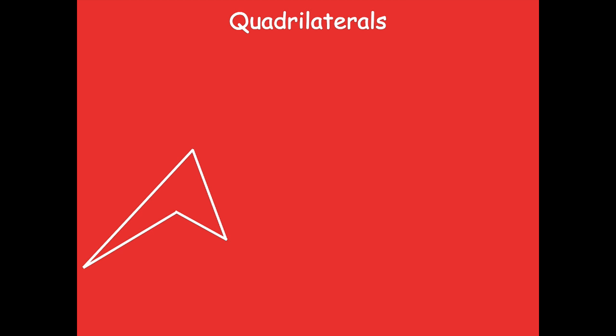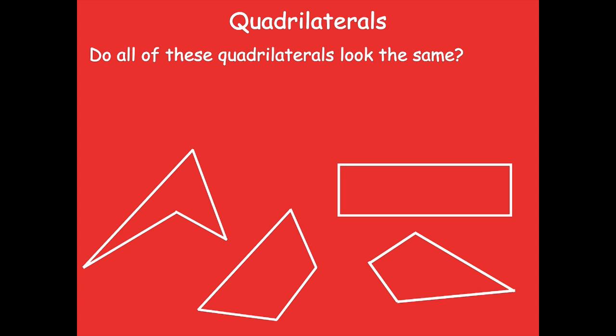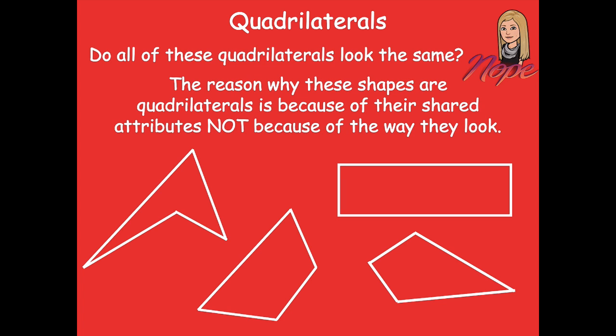Here are some quadrilateral shapes. Do all of these quadrilaterals look the same? Nope, they sure don't. But the reason these shapes are quadrilaterals is because of their shared attributes, not because of the way they look. Those shared attributes are four sides and four angles — that's what makes them a quadrilateral, not because all quadrilaterals look the same.